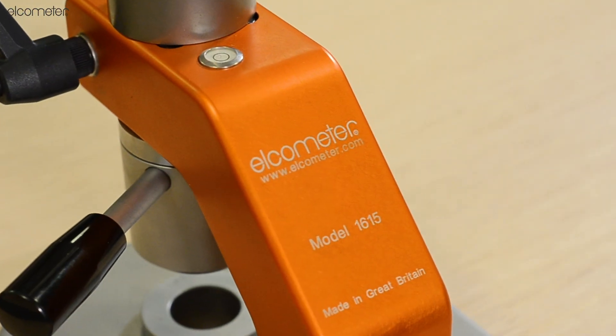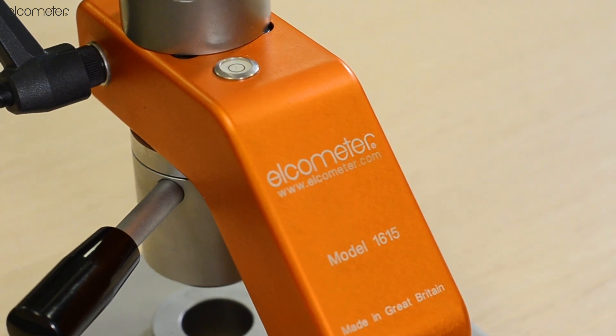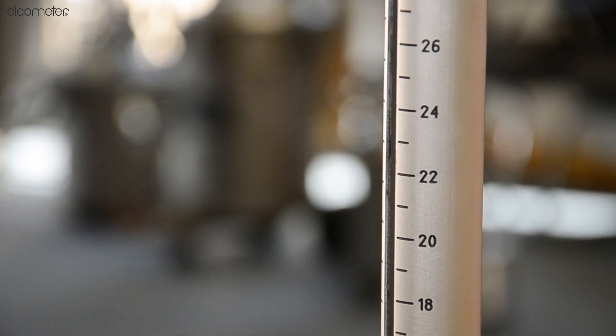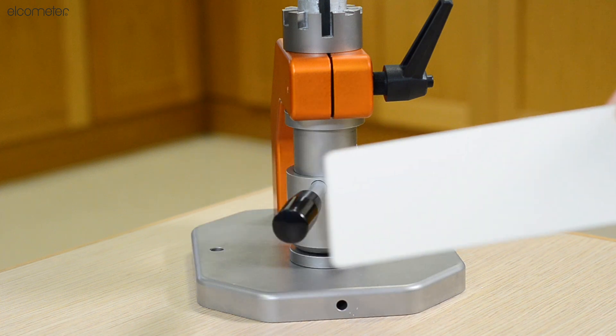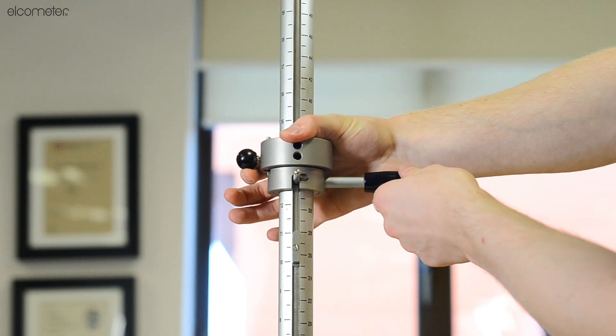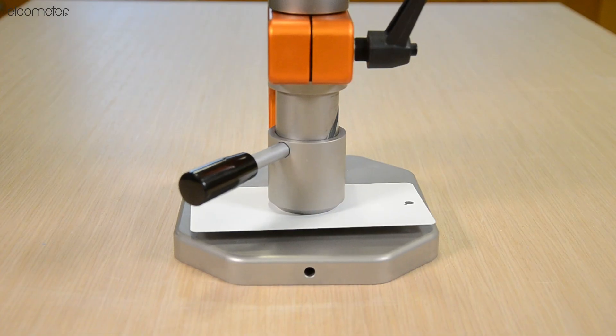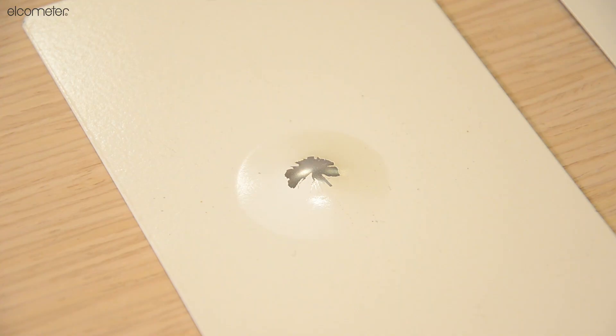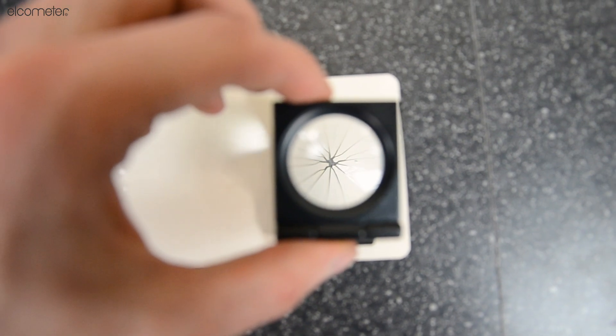The Elcometer 1615 Variable Impact Tester is a simple to use tester ideal for evaluating the resistance of a coating to impacts which typically result in the coating being elongated, cracked, or peeled.